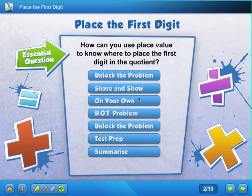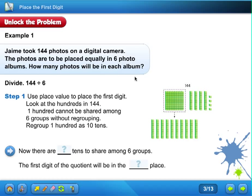Hi everyone, today we're going to learn how can you use place value to know where to place the first digit in the quotient. All right, are you ready? Here we go. So the problem reads: Jamie took 144 photos on a digital camera. The photos are to be placed equally in six photo albums. How many photos will be in each album?